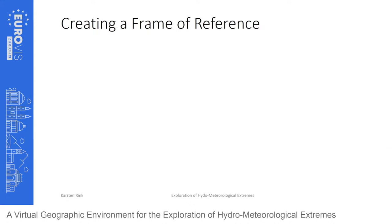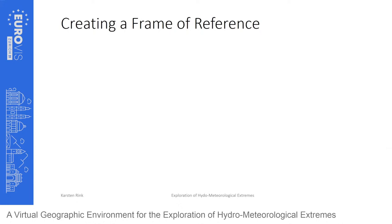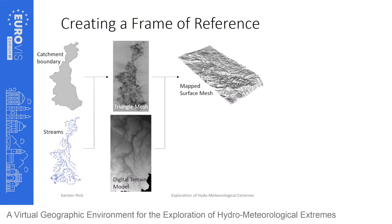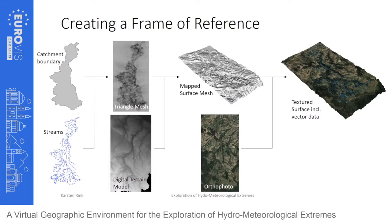To integrate all observed and simulated data, we first created a topological surface as a frame of reference. Based on catchment boundary and streams, we created a triangle mesh of roughly 3.2 million elements with an average edge length of 25 meters — fine enough to capture all details of this mountainous region. Elevation of mesh nodes was adjusted from the high-resolution digital terrain model from the state of Saxony, and a high-resolution aerial image was applied as a texture.